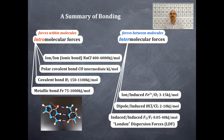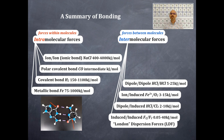Then an ion-induced dipole — that would be the iron ion and the oxygen molecule — and that bond energy would be between 3 and 15 kilojoules per mole. Then we have a dipole-dipole interaction, and that is with two permanent dipoles. That would be hydrochloric acid and hydrochloric acid, and that is between 5 and 25 kilojoules per mole for that bond energy.